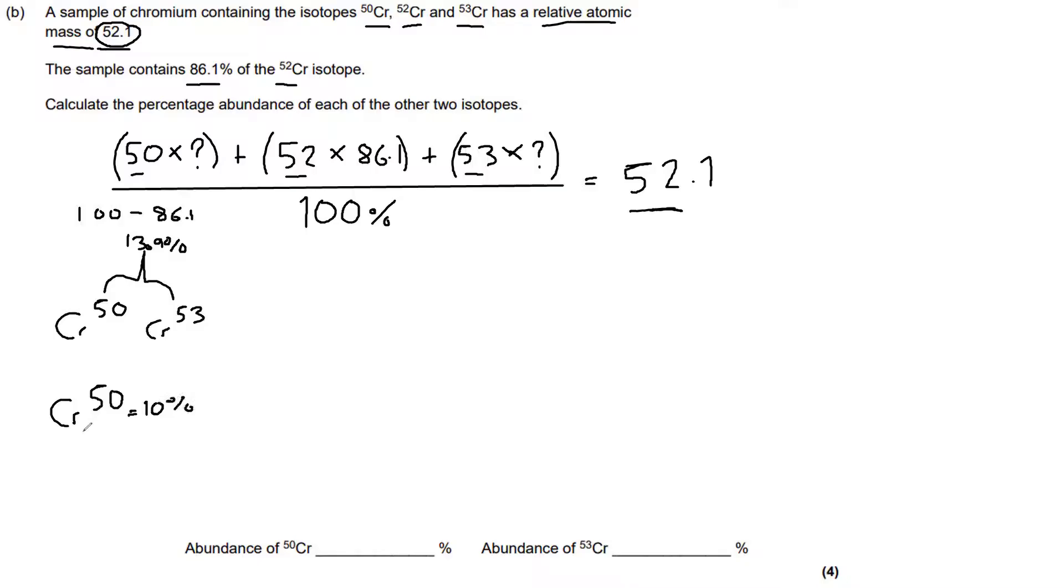So let's just pretend that chromium-50 is equal to 10%. That would make chromium-53 3.9. Now, we don't know. These are not true, these percentages. But I'm just showing you that we know that they add up to 13.9. That is true. So that means that chromium-50 in this made-up situation would be equal to 13.9 minus 3.9.